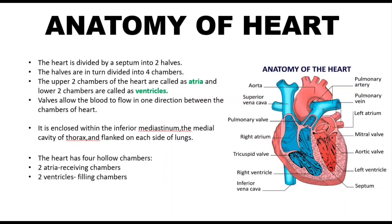The heart is divided by a septum into two halves, and the halves are in turn divided into four chambers. The upper two chambers are called atria or auricles, and the lower two chambers are called ventricles. Valves allow blood to flow in one direction between the chambers. The heart has four chambers: two atria, which are receiving chambers, and two ventricles, which are filling chambers.